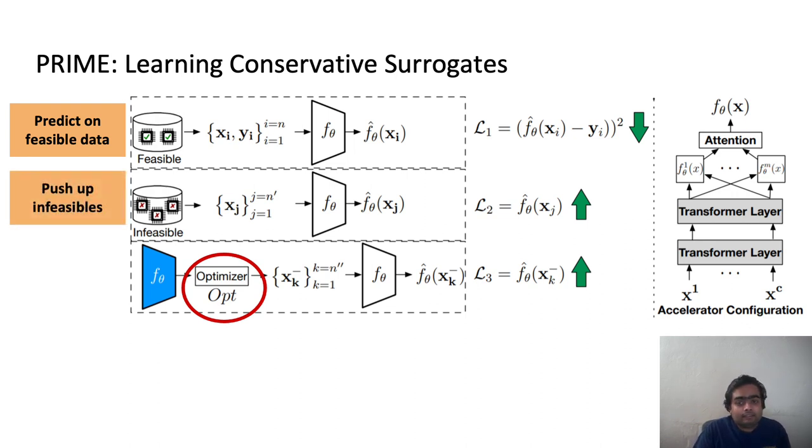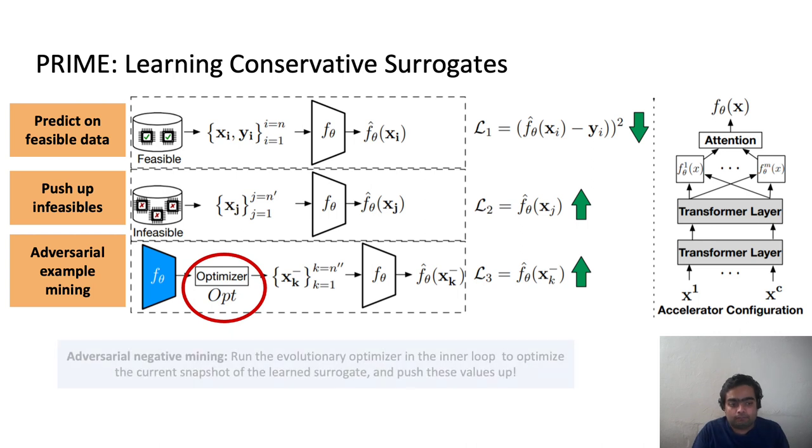Then secondly, it additionally has a loss term that pushes up the latency predictions for invalid designs or infeasible designs that you were also given, because remember, we had an infeasible dataset given to us. And finally, it runs this procedure to find these examples, so these adversarial examples that would fool the optimizer.